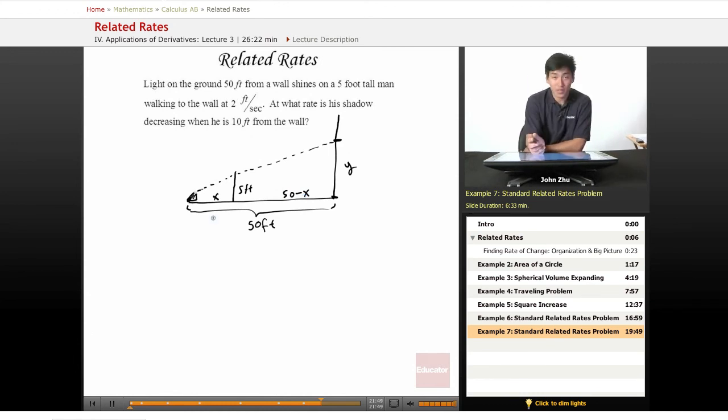How do all these variables relate? If he's walking to the wall at two feet per second, we can call this x, we can call that dx dt. To relate all these variables together, we see that this is a similar triangle inside an even bigger one. So 5 over y equals x over 50.